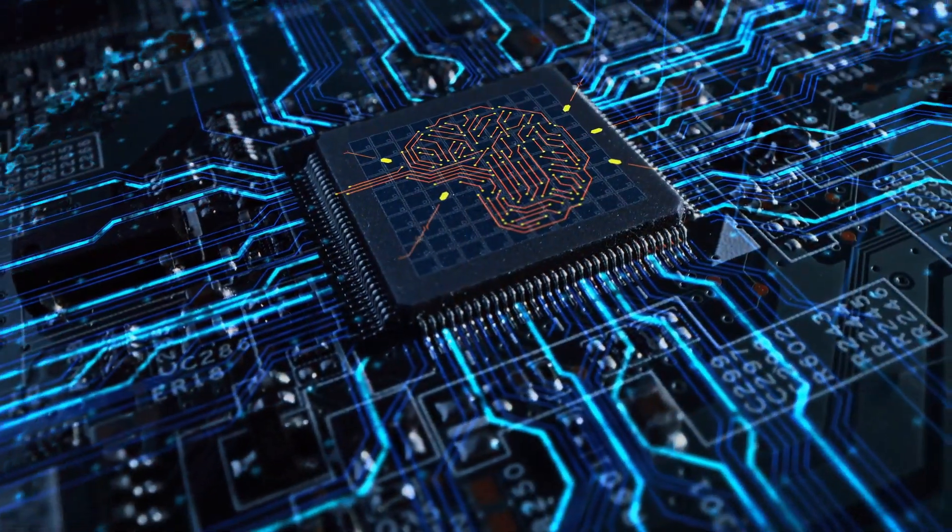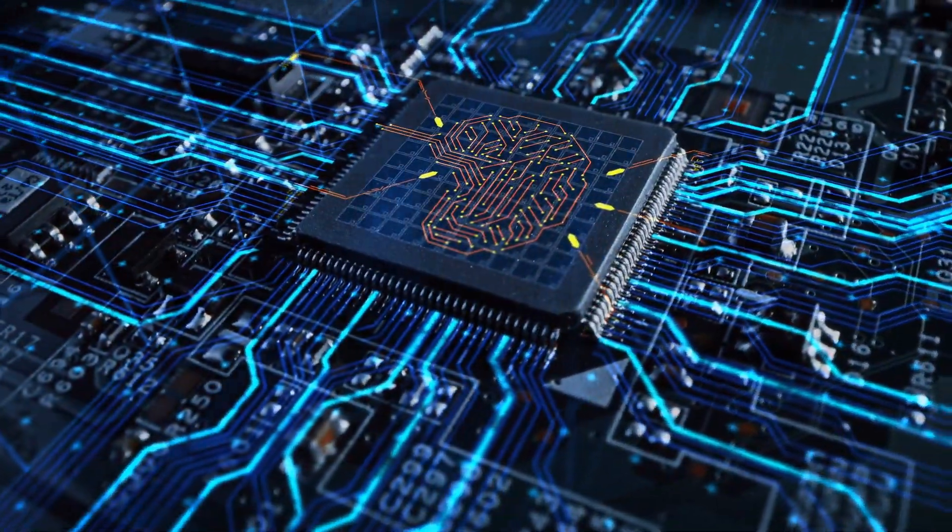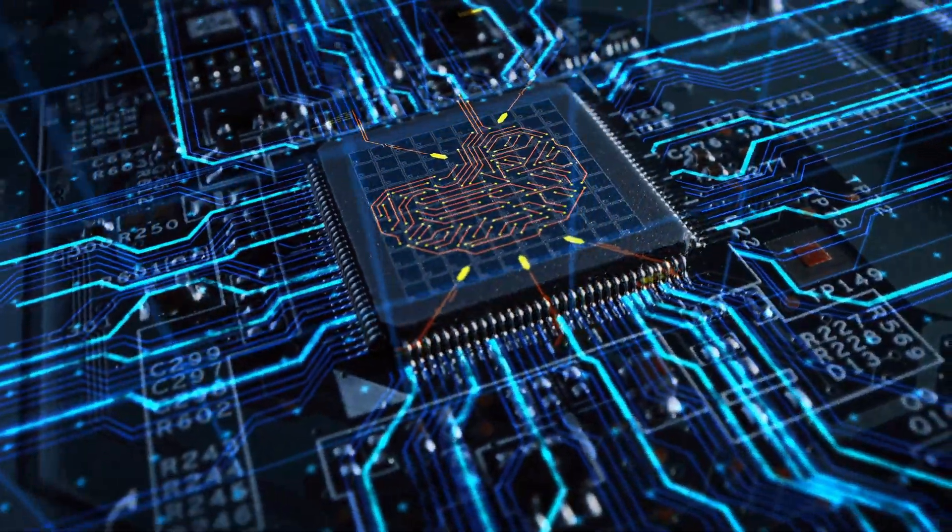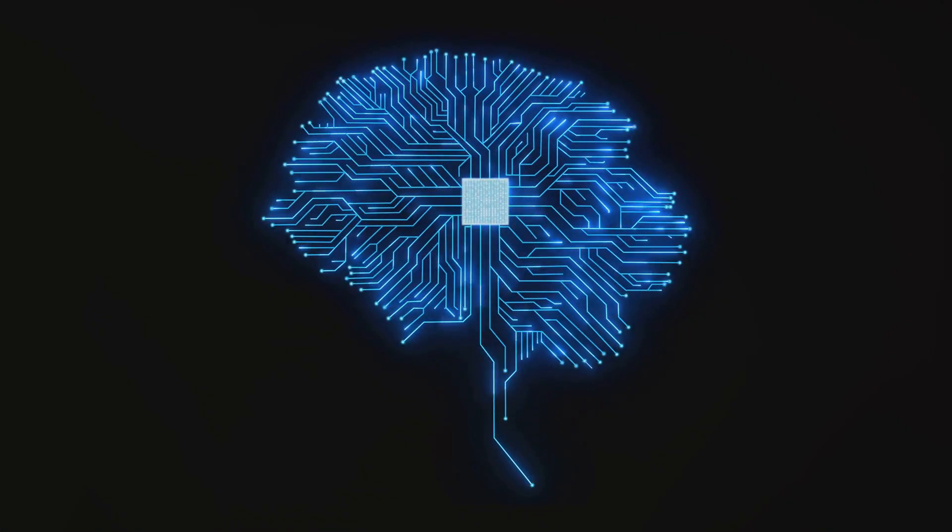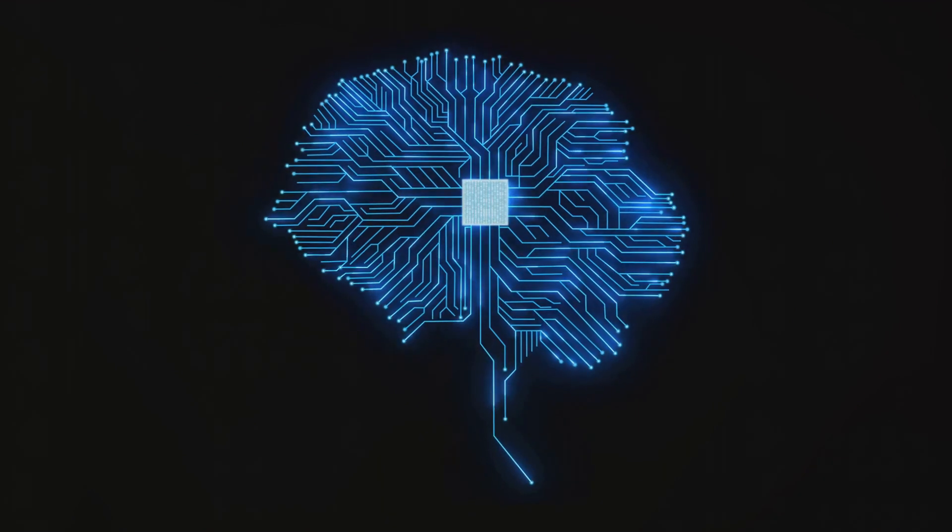Neuromorphic computing is a concept that seeks to mimic the human brain's architecture and efficiency. It's like taking a snapshot of how the brain works and then recreating that in a computer system. It's all about developing hardware and algorithms that mirror the neural networks present in our brains.